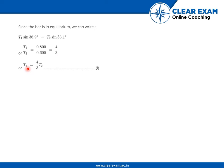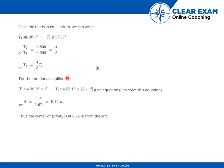So, we get T1 equals 4 by 3 T2 and it is denoted as the first equation. For the rotational equilibrium, T1 cos 36.9 degrees into small d equals T2 cos 53.1 degrees into 2 minus d.